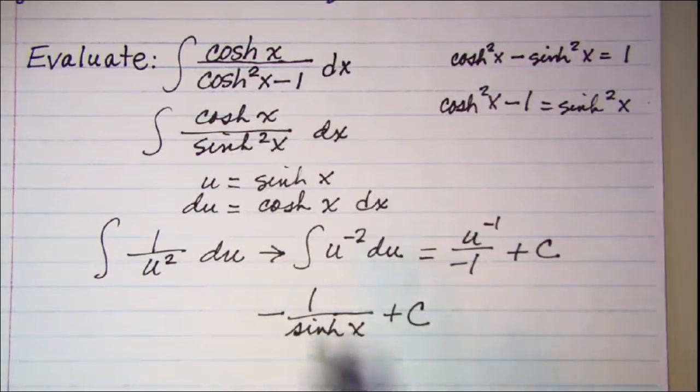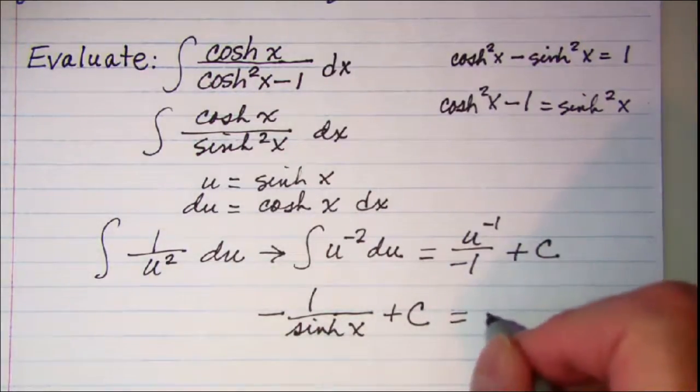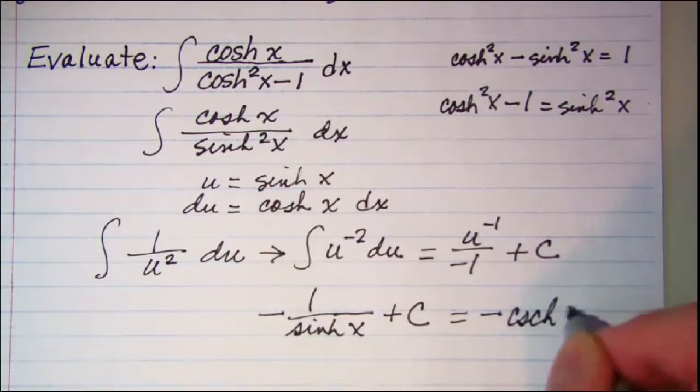And we know then that the reciprocal of the hyperbolic sine of x is the hyperbolic cosecant x. So this is the same then as a negative hyperbolic cosecant of x plus a constant.